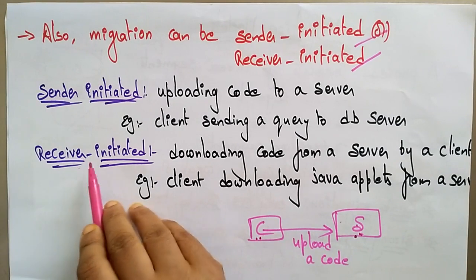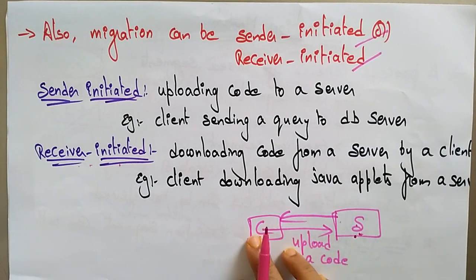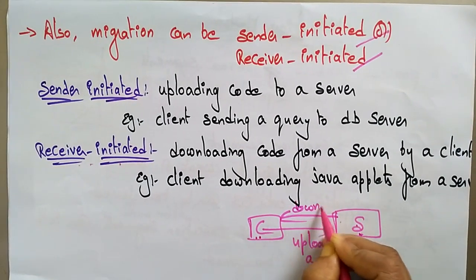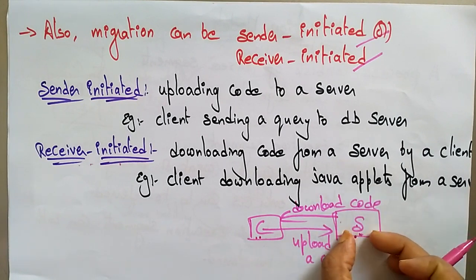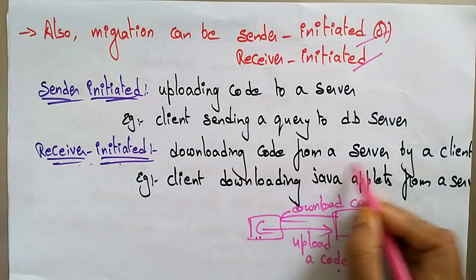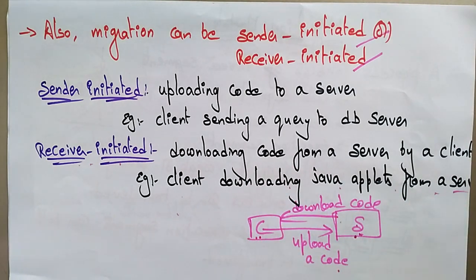The other model is receiver-initiated. In this case, the client downloads code from a server — the server gives permission to download the code, so the code migrates from server to the client. An example is a client downloading Java applets from the server.